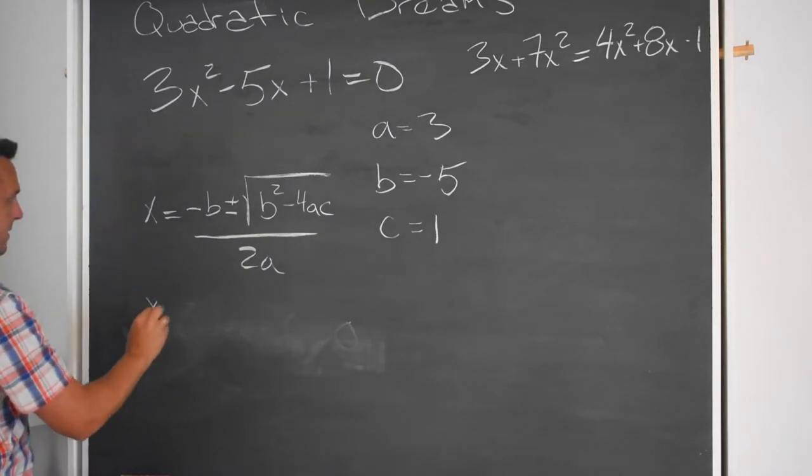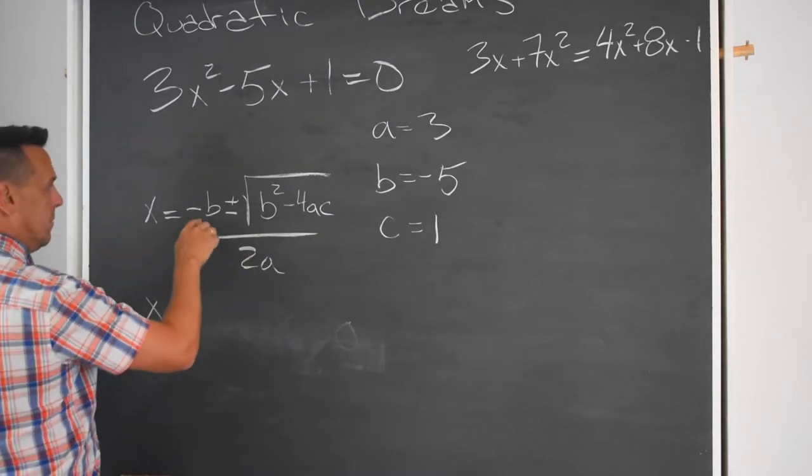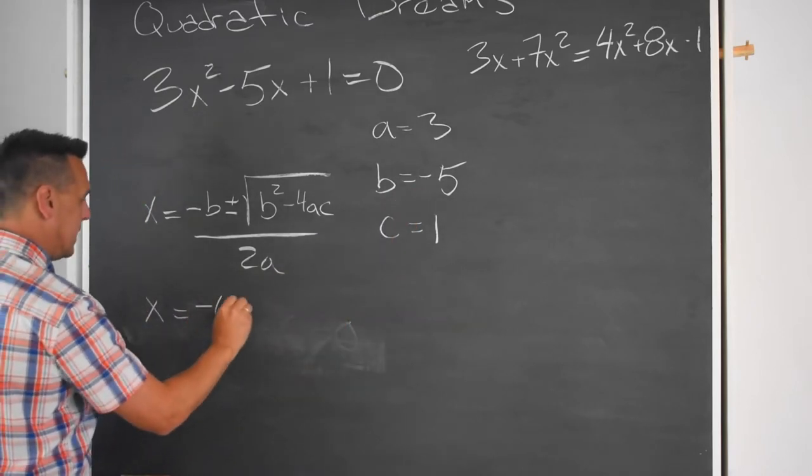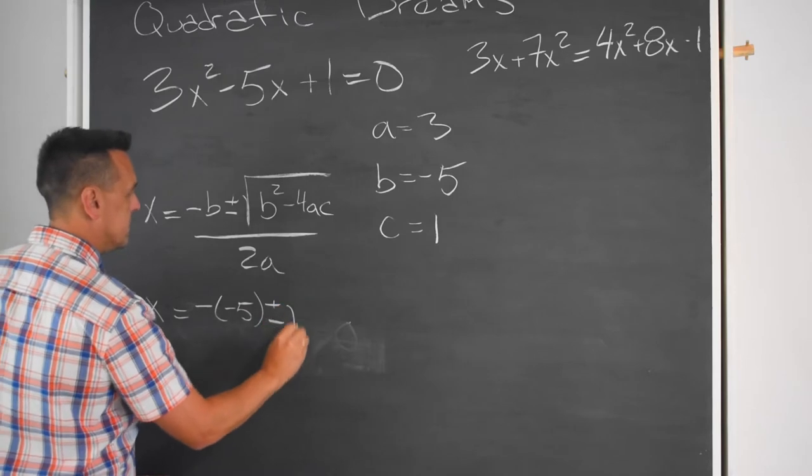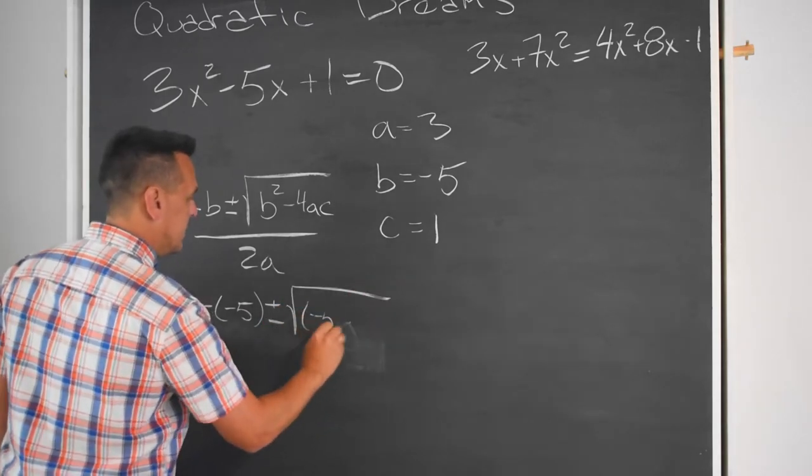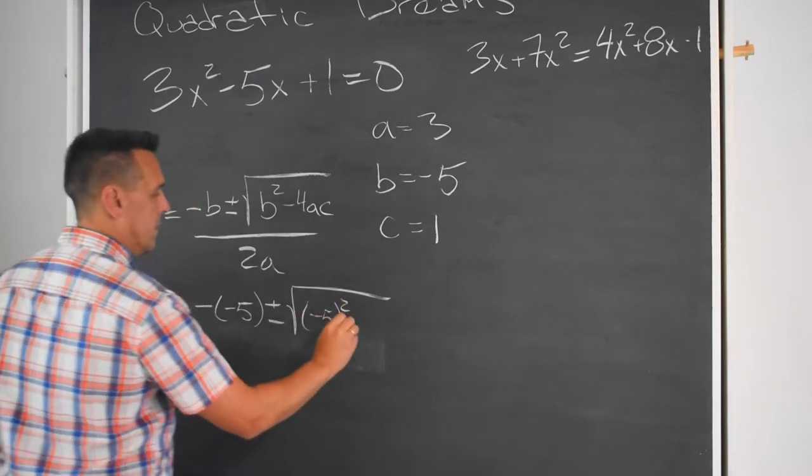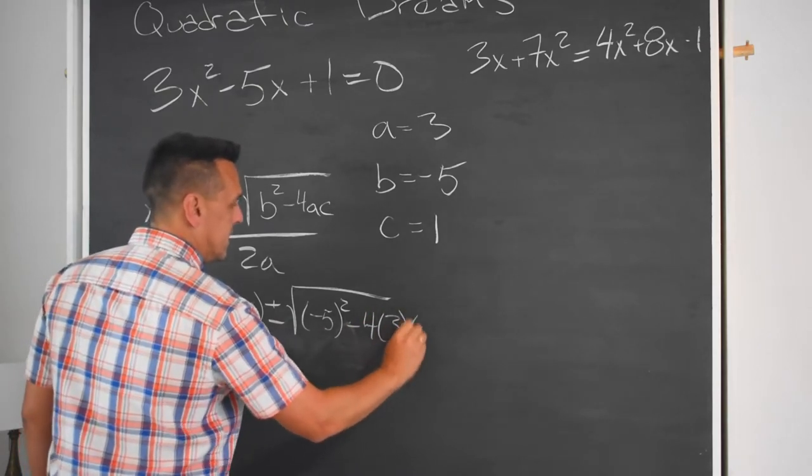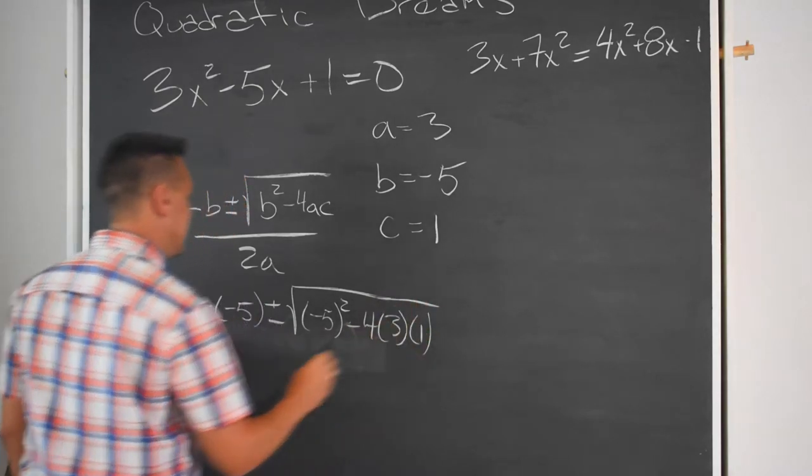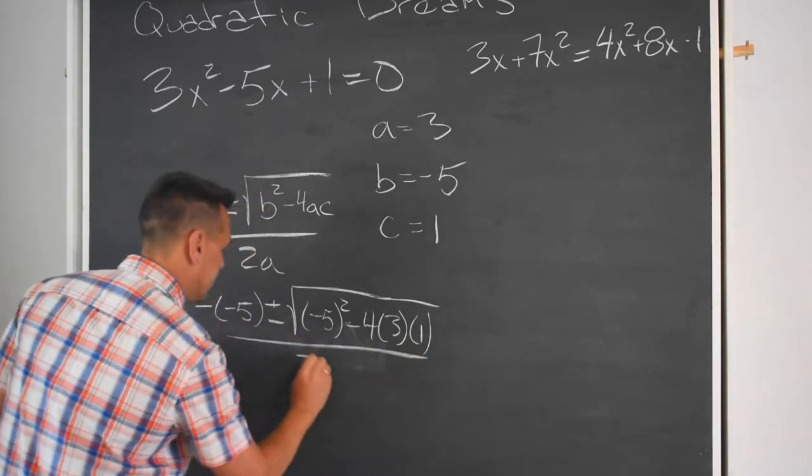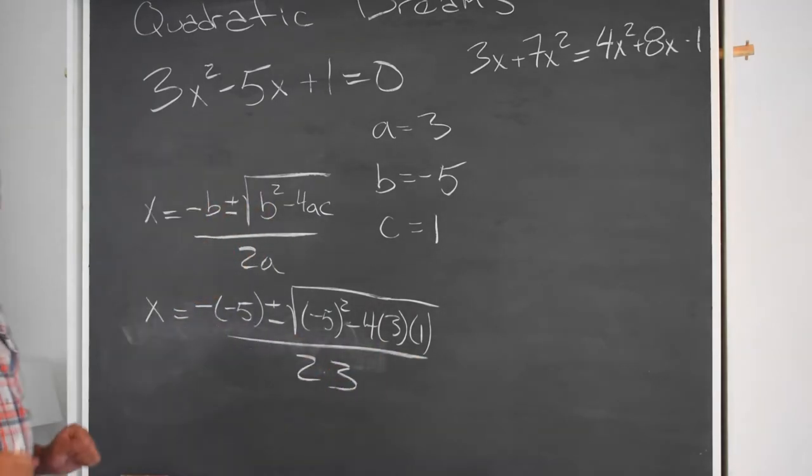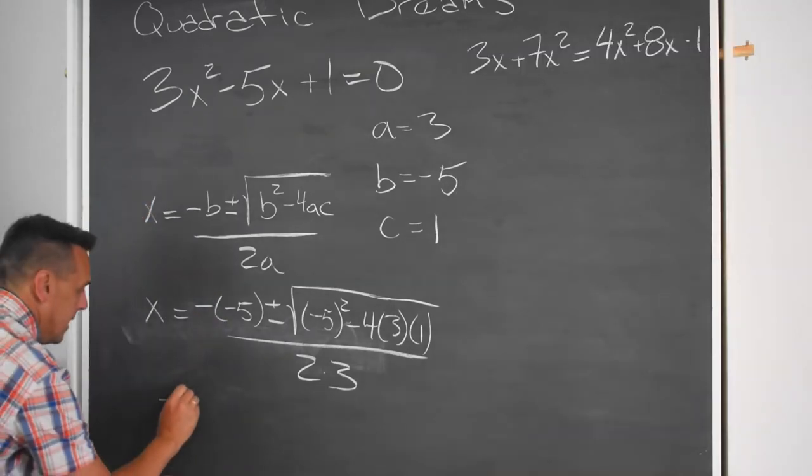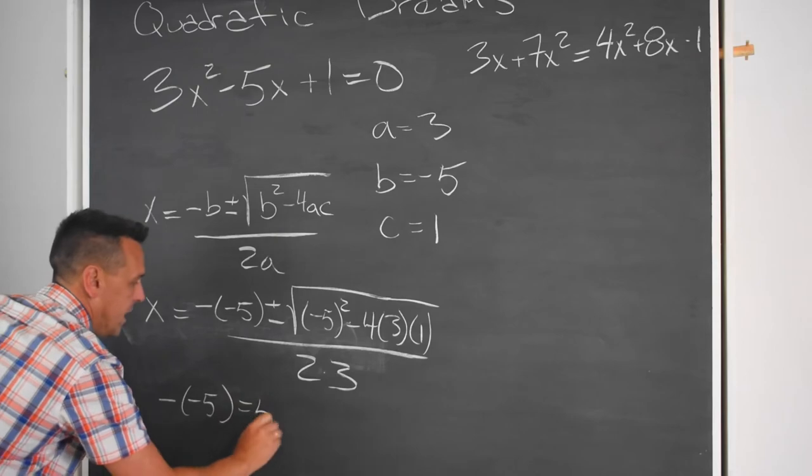So plugging in, I get x equals minus b. And if you think a minus is tough, it's tough to have a minus of a minus. Minus 5 plus or minus the square root of minus 5 squared minus 4 times a is 3 times 1. Well, at least something there is easy. All over 2 times 3. We've got some arithmetic to get through there. We're going to have to know that minus minus 5 is equal to 5.